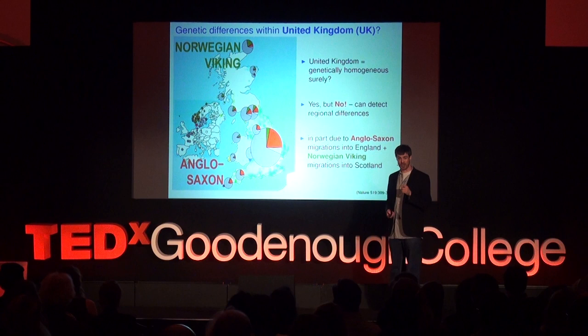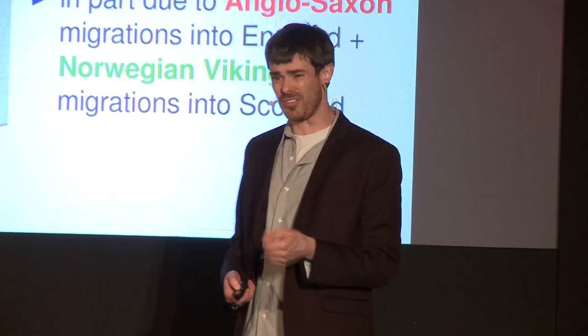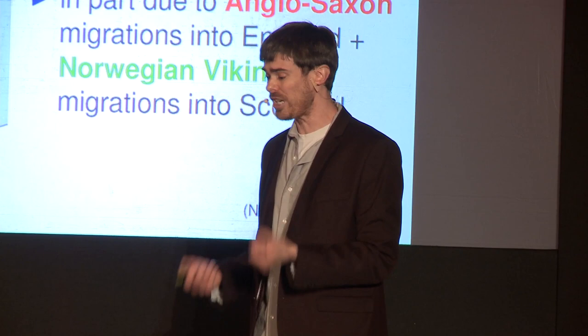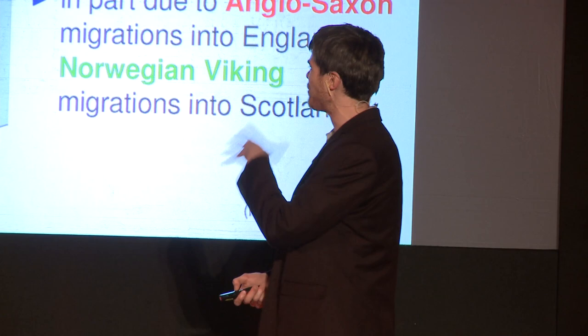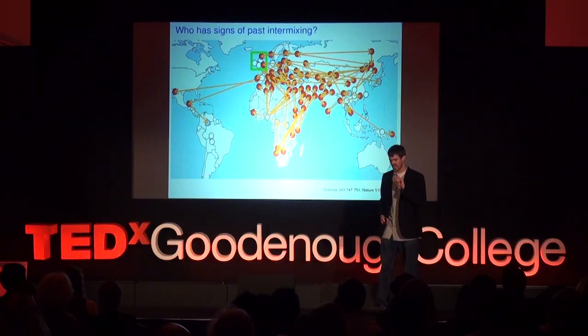Meanwhile, as you go north, the red disappears and gets replaced by green, representing matching to modern-day Norway. That's at its highest in the northernmost pie, which is the Orkney Islands — consistent with their history. Following the Norwegian Viking conquest of the eighth and ninth century, Orkney was annexed by Norway for about 500 years until the 1460s. Even with an island as relatively small as the United Kingdom, you detect these different migration events, with sources of migrants varying across the UK.